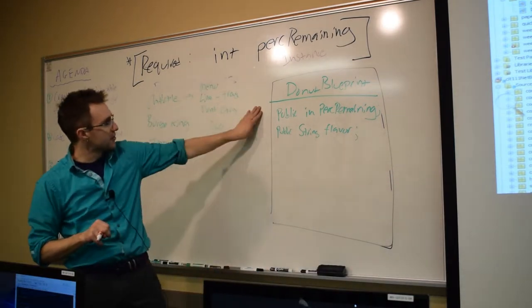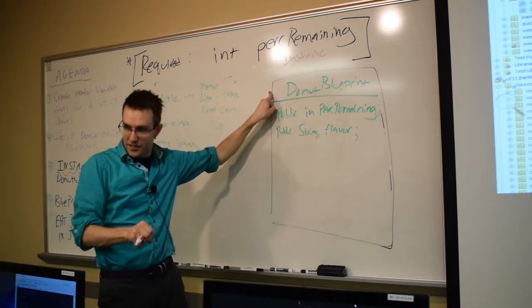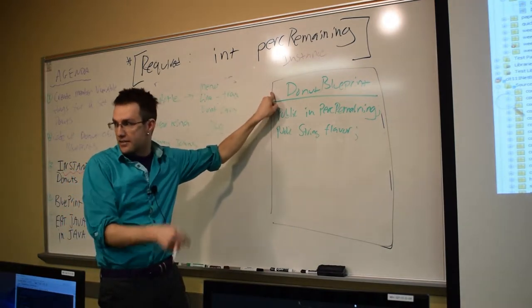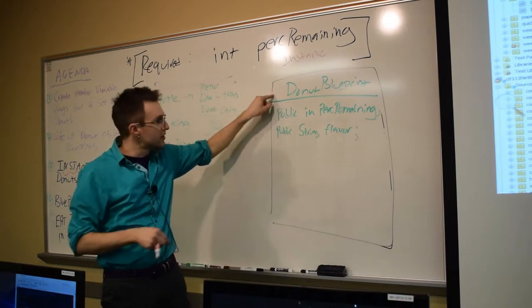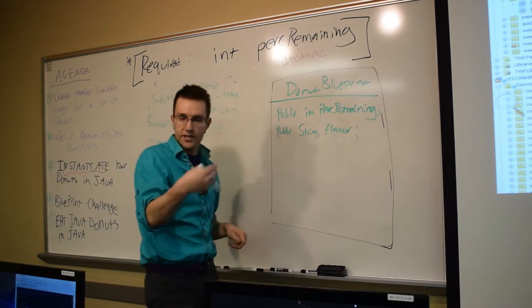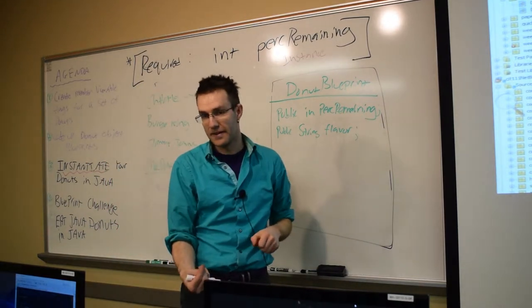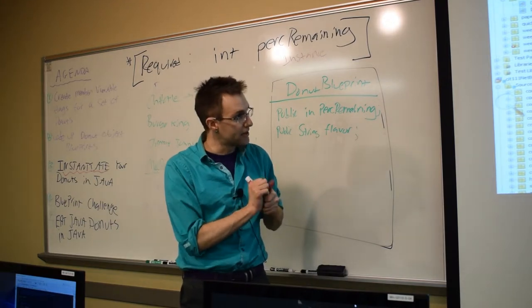In our case, we can think about it like this. There is a Bugatti blueprint that was used to make each instance of that car. We have a donut blueprint. We will use that donut blueprint every time we make an instance of a donut. And we're going to do that right now in donut land.